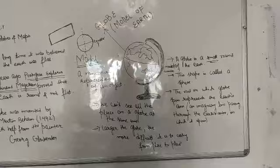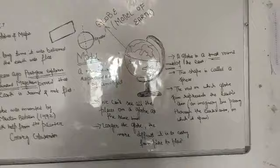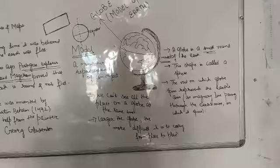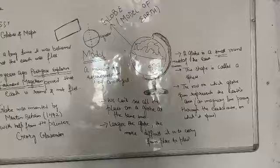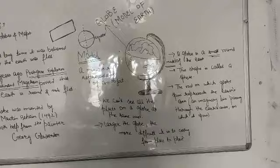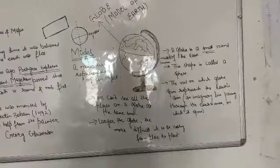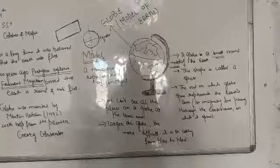Globe is the model of the earth. What is a model? A model is basically when we try to see big things in a small form. That thing is known as model. We can say a miniature representation of an object is known as model.